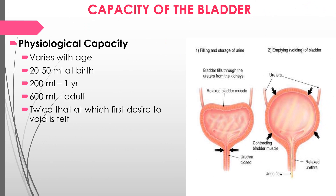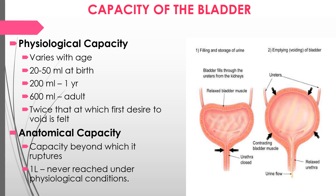The capacity of the bladder varies physiologically with age: 20 to 50 ml at birth, 200 ml at age 1 year, and up to 600 ml in adults — beyond which the urge becomes unbearable. The anatomical capacity, beyond which the bladder would rupture, is approximately 1 liter, but this is never reached under physiological conditions because the bladder empties before then or pathology intervenes.